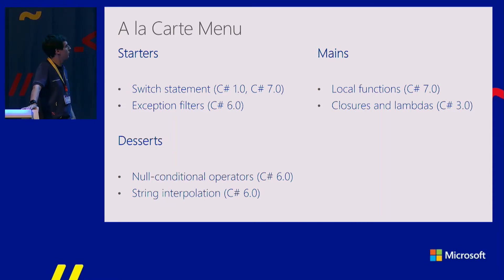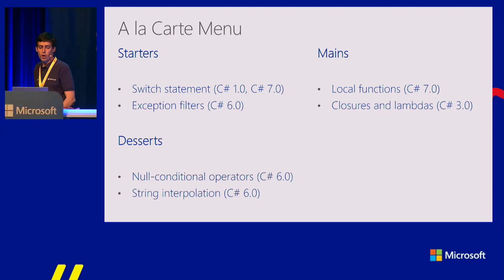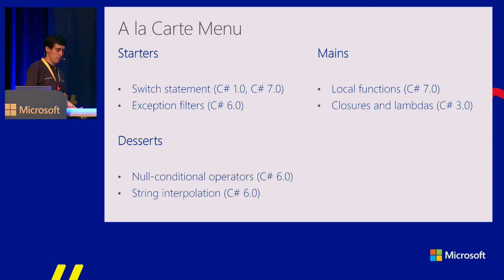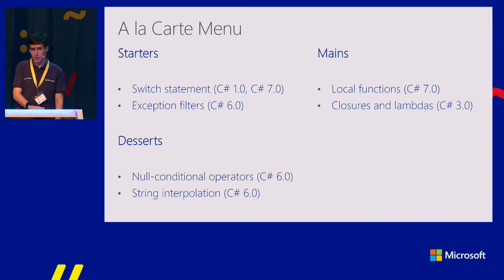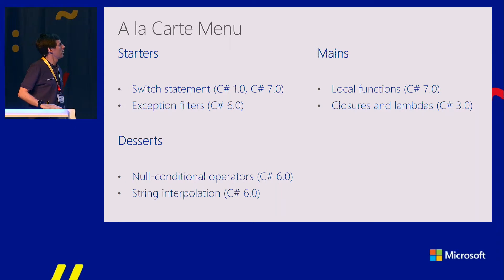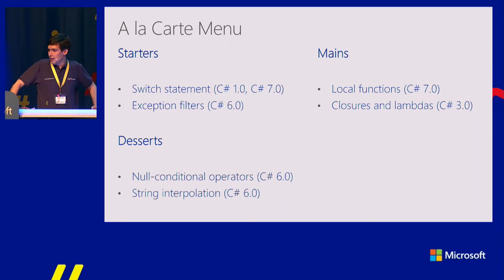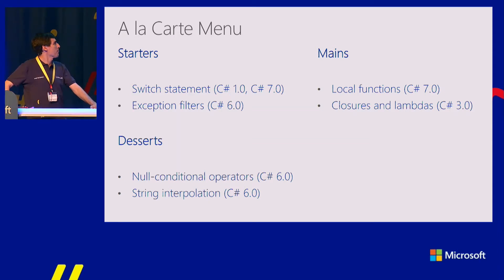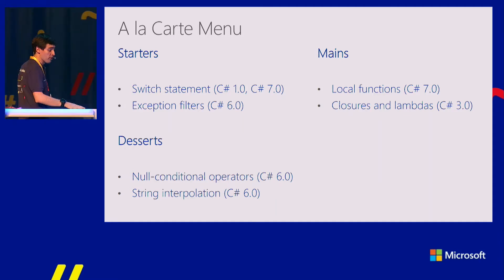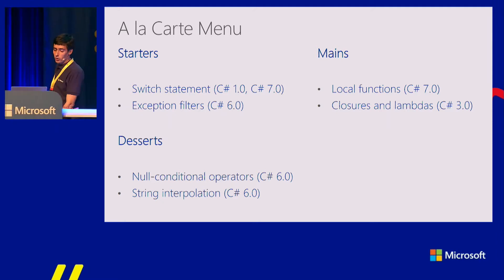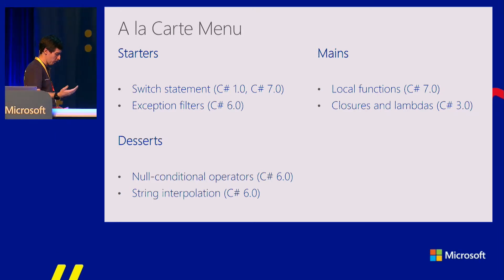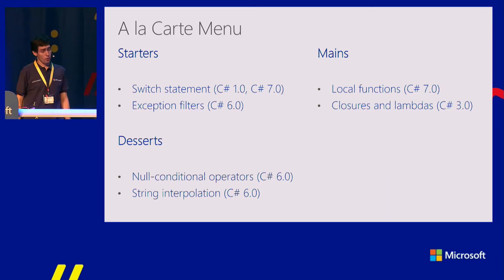One of the starters, one from the mains, and one from the desserts. For the starters today, I have some talk about the switch statement — which seems old-fashioned, but since C# 7.0 it has new functionality including pattern matching. Or we could talk about exception filters, the keyword introduced in C# 6. For the mains, we'll either talk about local functions — a great feature in C# 7 — or closures and lambdas from C# 2.0 and 3.0. For dessert, either null conditional operators (the Elvis operator) or string interpolation from C# 6.0.